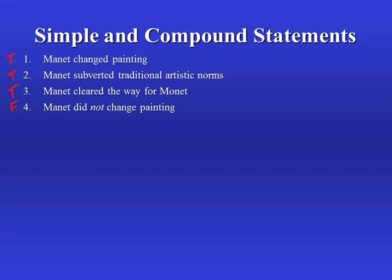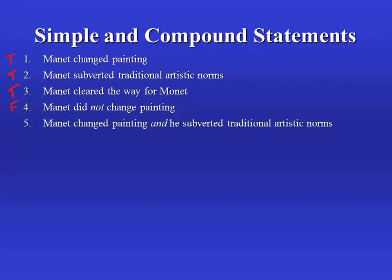Here's another example. Number five: Manet changed painting and he subverted traditional artistic norms. Here, we've taken sentence one and sentence two and put them together with the conjunction 'and'. Given that the two sub-sentences, one and two, we are both taking to be true and we're using an 'and' here, then the whole of five is also true.